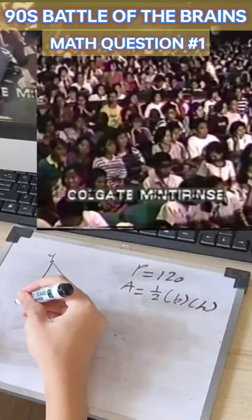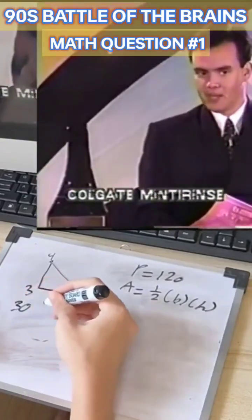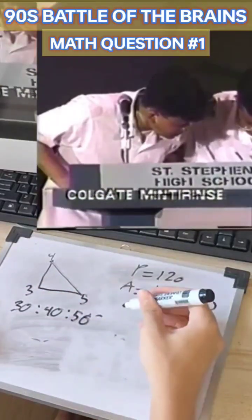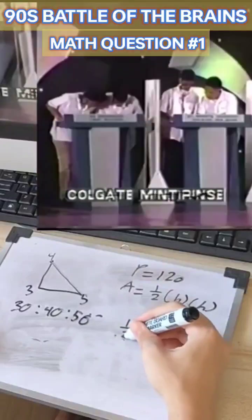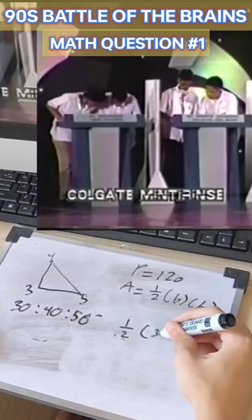We're picking it up from where we left off last week. Still on top is St. Stephen's with 1,600 points. Second place, Grace Christian, 1,450. And St. Mary's, 800.